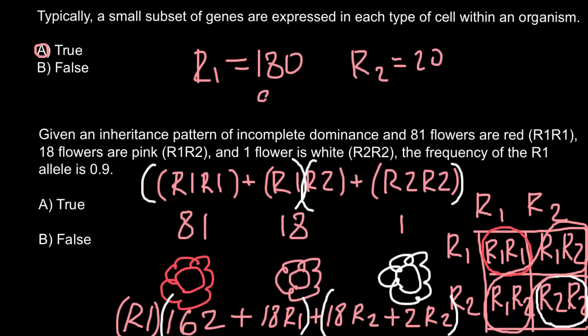The number of R2 alleles in this gene pool is 20. This means 90% are R1 alleles and 10% are R2 alleles.